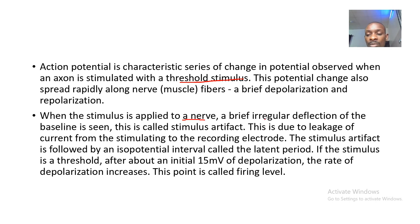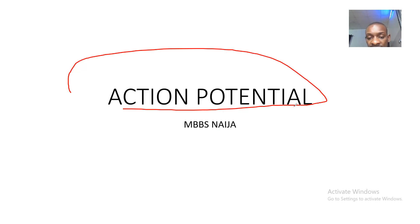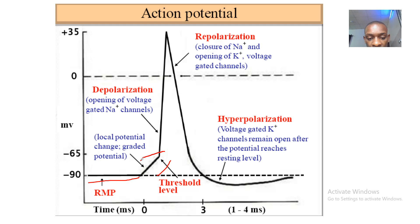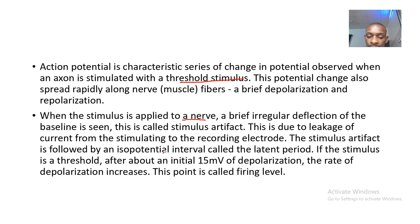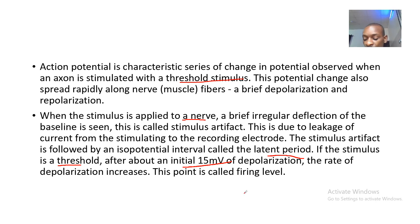When the stimulus is applied to a nerve, a brief irregular deflection of the baseline is seen — this is called the stimulus artifact. This stimulus artifact is a brief deflection due to leakage of current from the stimulating to the recording electrode. It is followed by an isopotential interval called the latent period.